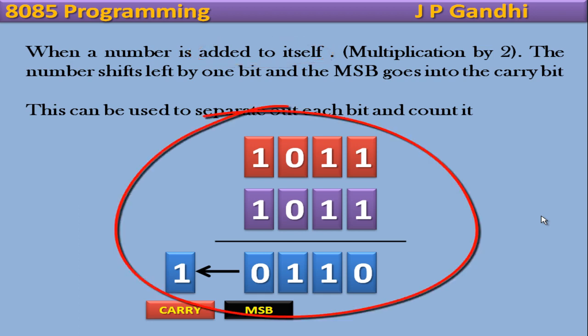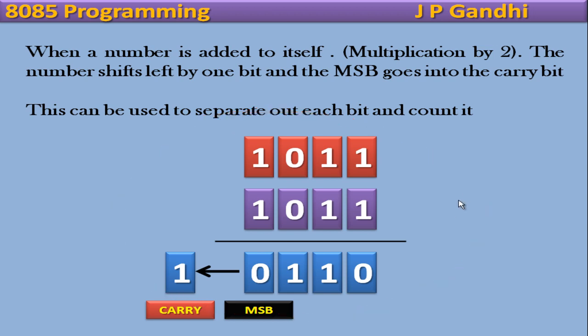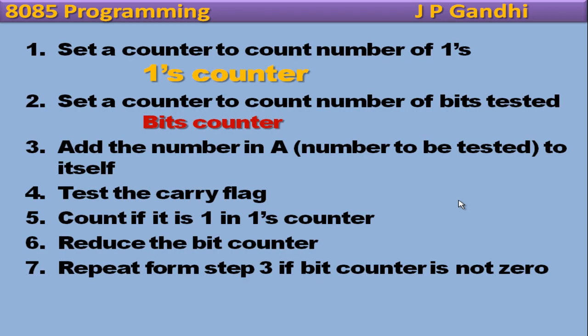One easy method is to add the number in register A to itself. Here I have shown an example where you have a 4 bit number and you are adding it to itself. And when you add the number to itself, it is multiplication by 2. And therefore, you find that the MSB goes into the carry flag. Now this carry flag can be tested and you will find that based on that you can count the number of ones.